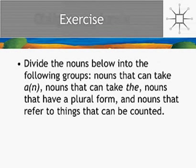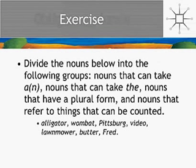There are nouns that inflect for plural in a regular way, and nouns that do so in an irregular way. But it turns out there are nouns that don't inflect for plural at all. Let's do a little exercise. The word 'alligator' — can we put 'an' in front? Yes, an alligator, not a problem. A wombat. But 'a Pittsburgh' is not so good. A video is fine. A lawnmower is fine.